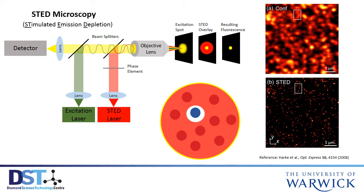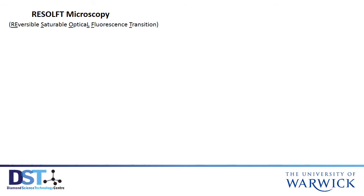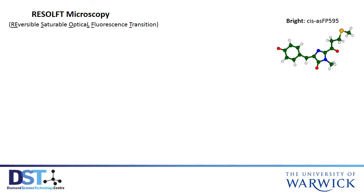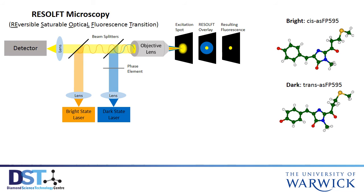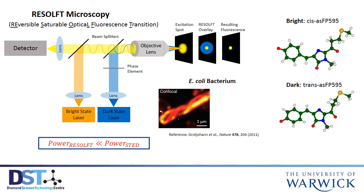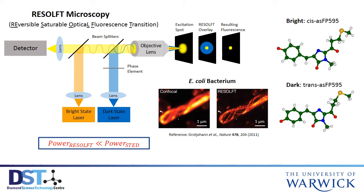In order to image, the STED technique has to use a high-power STED laser, which can kill the sample. An alternative yet similar technique can be used, known as RESOLFT. Here, you use a fluorophore which can change its molecular shape so that it has two states: one which is bright and emits light, and the other which is dark and doesn't emit light. Orange light switches to bright, and doughnut-shaped blue light switches to dark. These laser powers are much less than the STED laser power, so the sample is not harmed. Here is an example of an E. coli bacterium being imaged with a confocal and then a RESOLFT microscope, which produces a much better resolution of 70 nanometres.